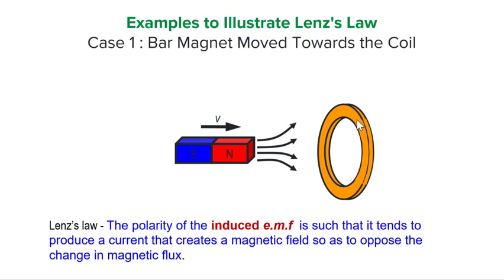By Faraday's Law, we know there will be an induced EMF that will cause a current in the coil. Lenz's Law tells us that the induced EMF is such that it will try to set up an induced current to create a magnetic field to oppose this increasing flux linkage experienced by the coil. So what will it do? The induced EMF in the coil will try to set up a north pole at the side closer to the bar magnet and a south pole at the face further away.